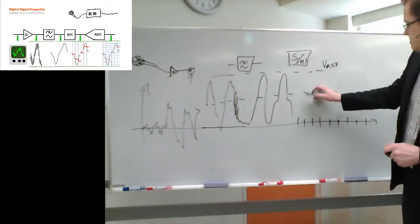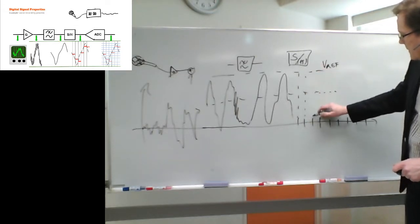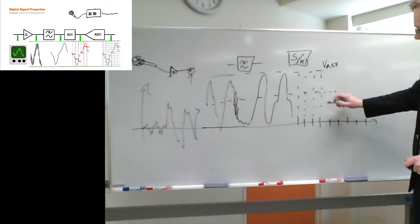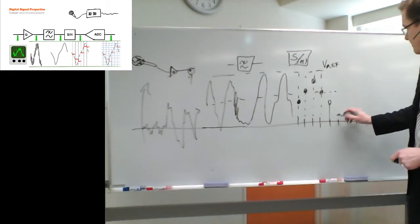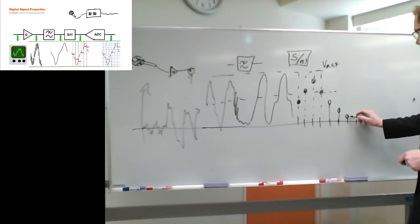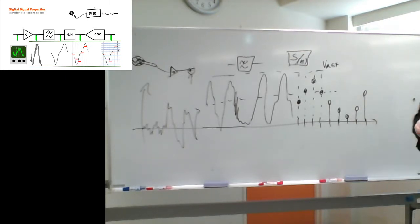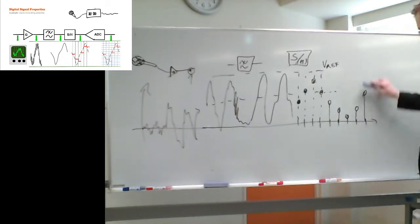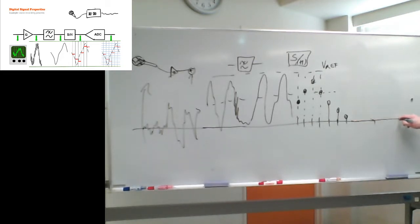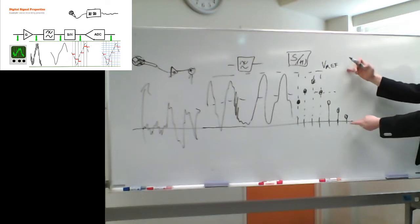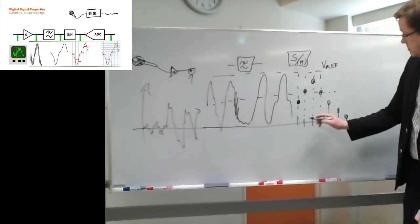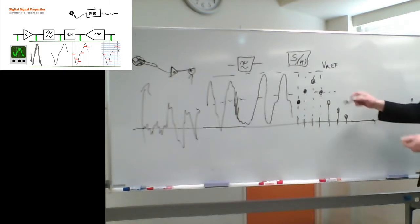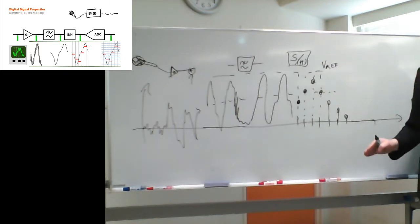After sampling, you have data only at certain times — a sampled signal. This is not yet a digitized signal because the values can still be anything. It's discrete in time but continuous in value, so it's still an analog signal — a sampled analog signal.